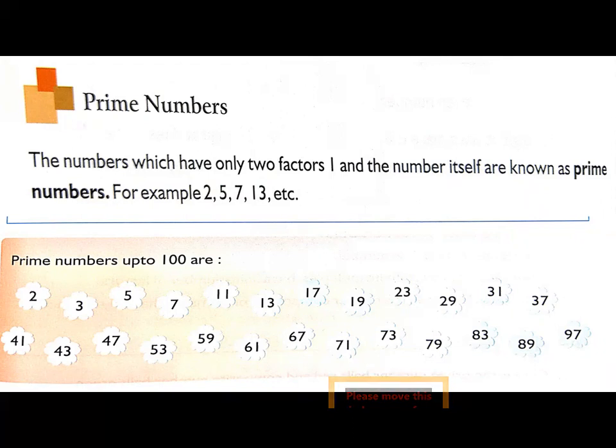Prime numbers up to 100 are given below: 2, 3, 5, 7, 11, 13 and etc. So, these are the prime numbers up to 100. What is meant by prime numbers? Prime numbers have only two factors, 1 and the number itself.